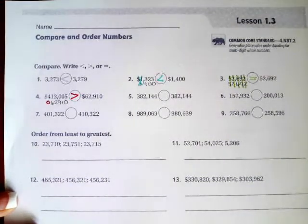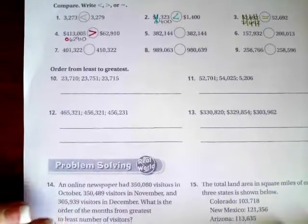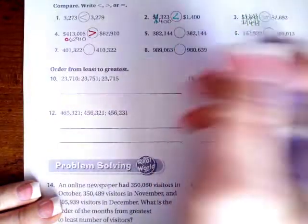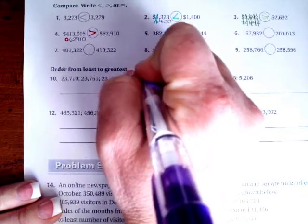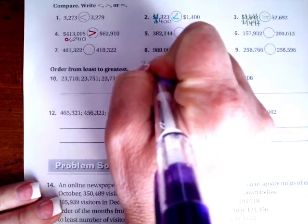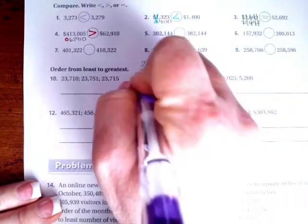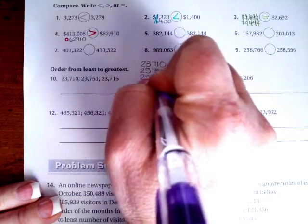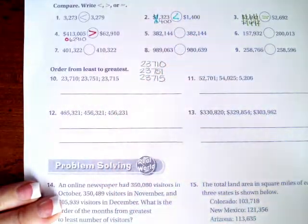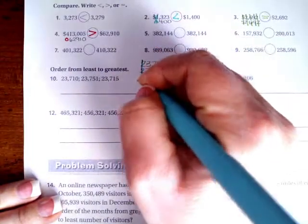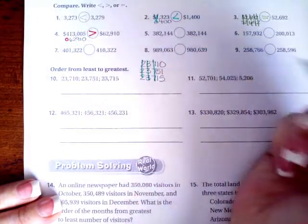I want you guys to do 5 through 9 — you totally can, I believe in you. We're going to go down and do number 10. I'm going to write the numbers here: 237,102 and 237,512 and 237,115. It is very important when you are doing this to line up your columns. My twos are the same, my threes are the same, my sevens are the same.